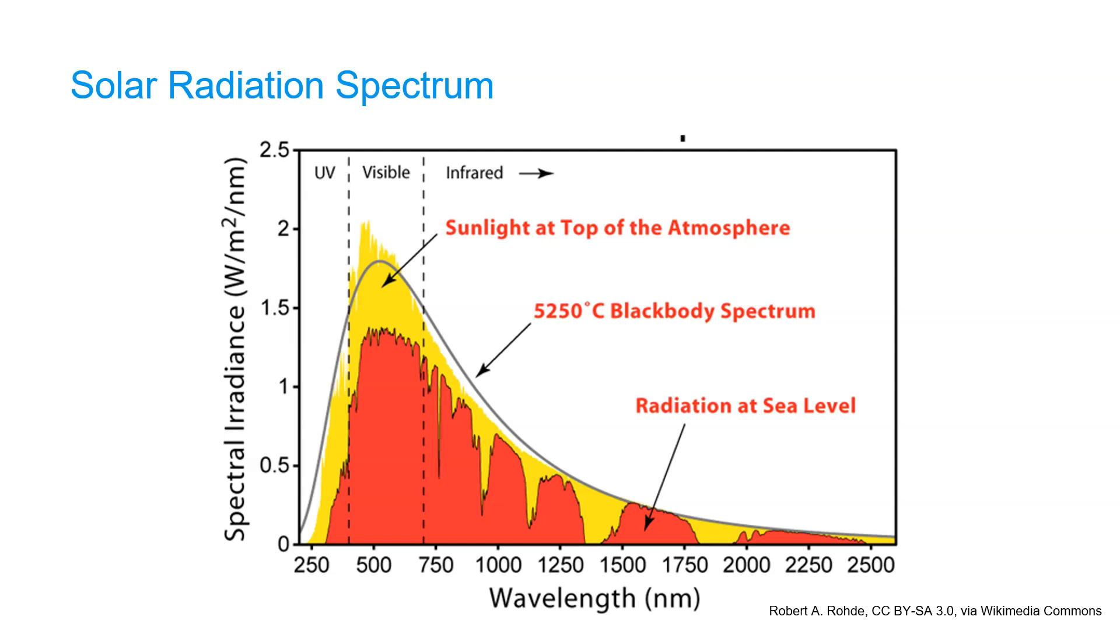However, in reality, the Sun is a real object and not a black body. The yellow curve shows the sunlight at the top of the atmosphere, which deviates a bit from the black body spectrum. What is received at the surface of the Earth is depicted in the red curve.